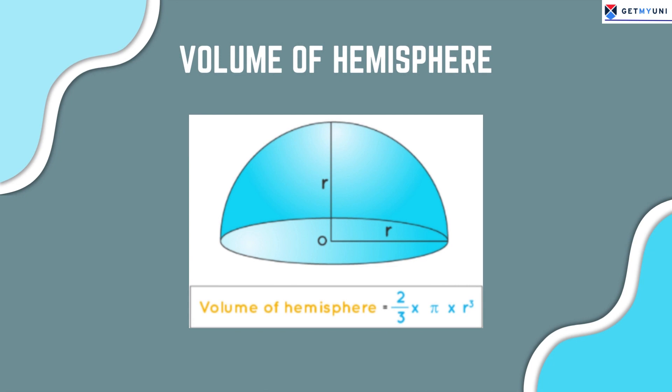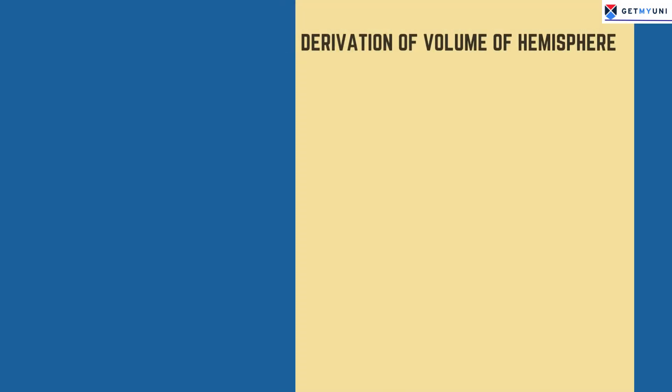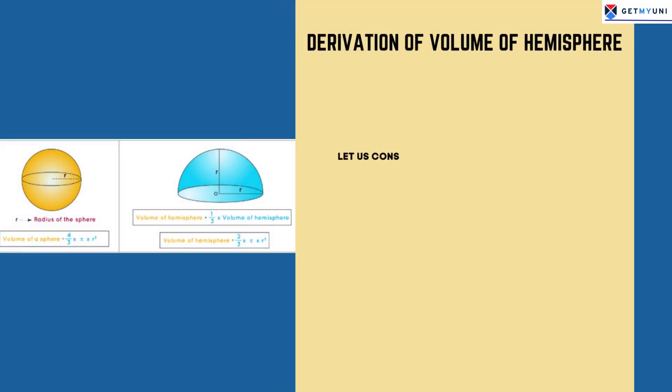Now, let us see the derivation of the formula for volume of hemisphere. Since a hemisphere is half of a sphere, we can divide the volume of a sphere by 2 to get the volume of the hemisphere.